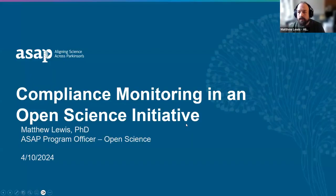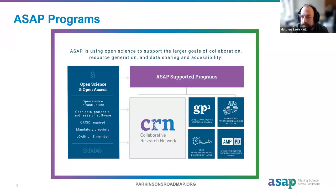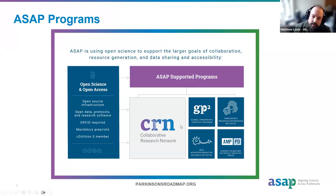I'm Matt Lewis, a Program Officer for Aligning Science Across Parkinson's. Today I'm going to talk about our compliance workflow process and highlight some data from a recent publication that announces what we're doing and how it's going. ASAP is a funding organization funded by the Sergey Brin Family Foundation, making huge investments in Parkinson's science through a variety of programs.